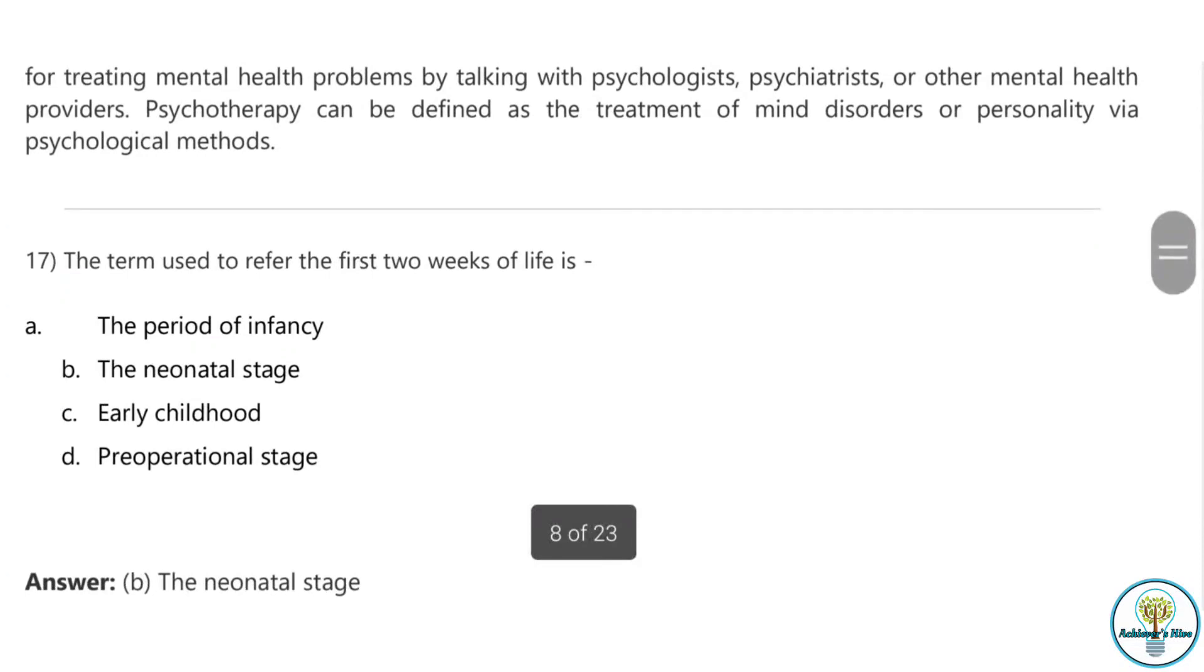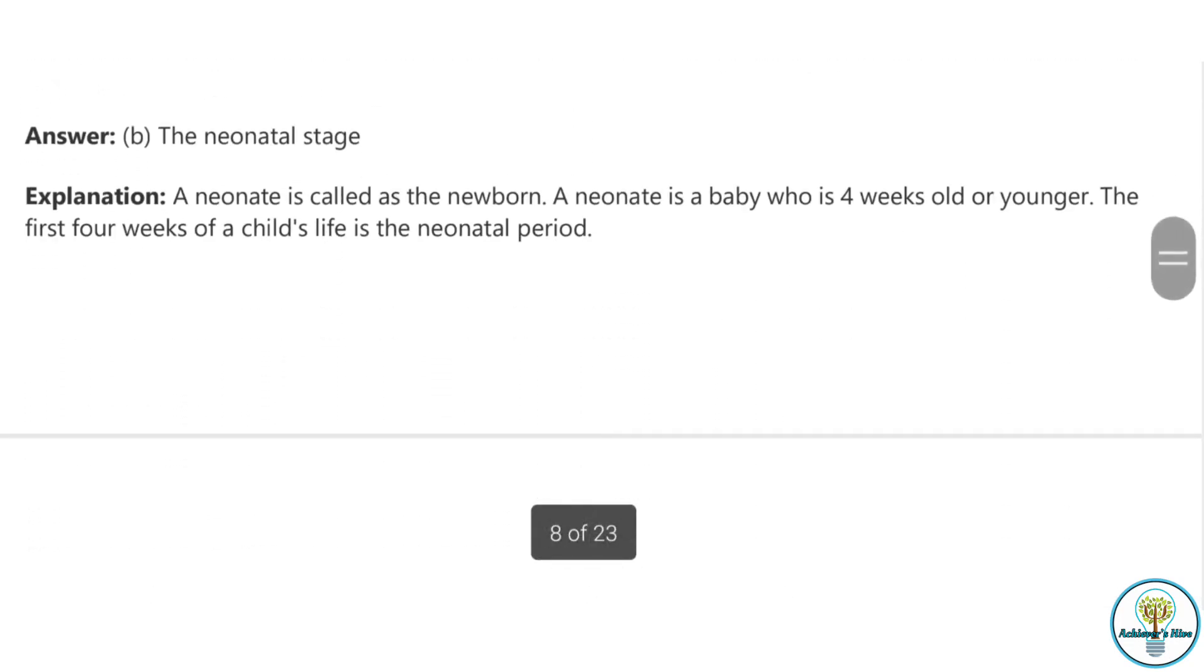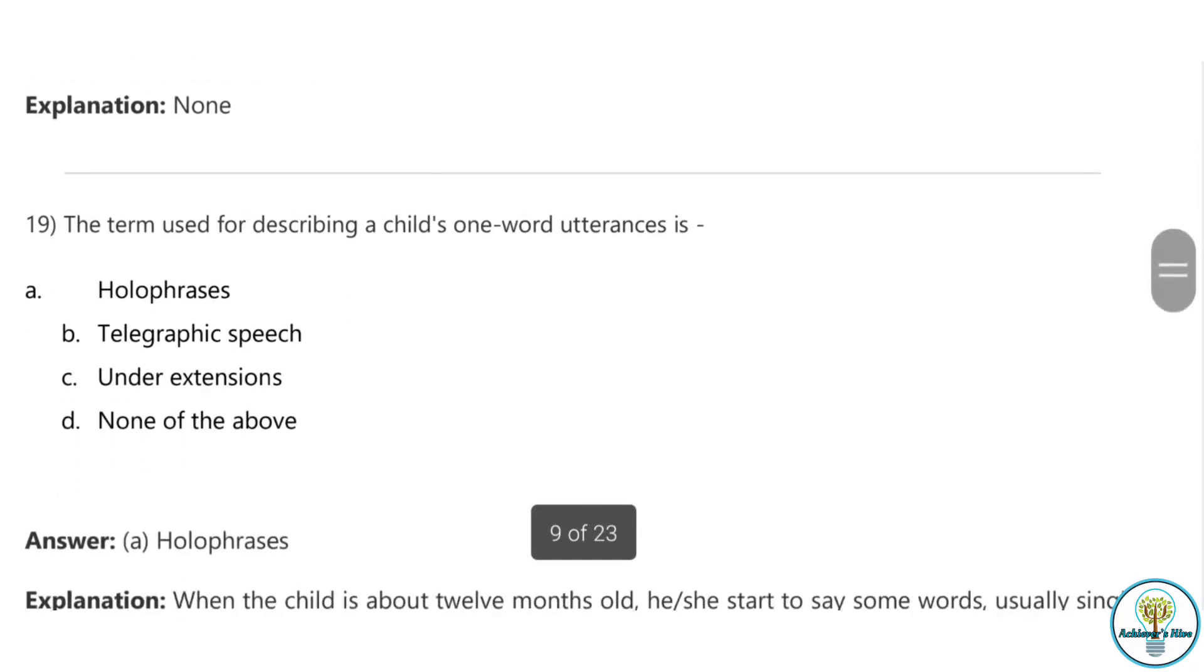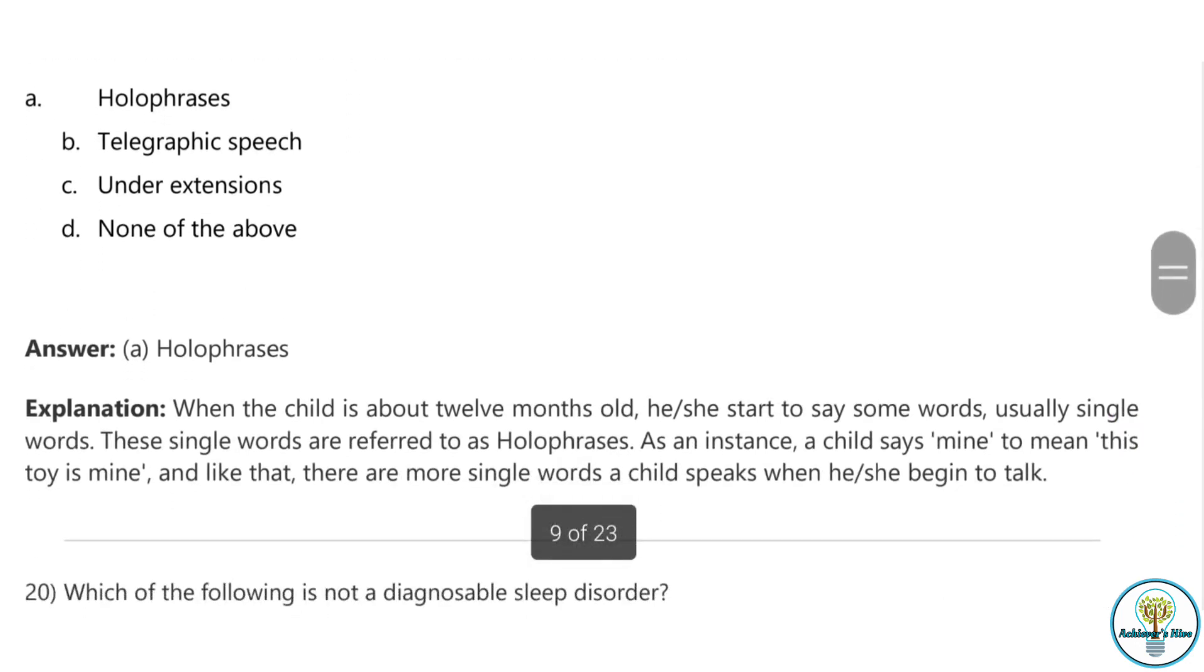Question seventeen: The term used to refer the first two weeks of life is known as the neonatal stage. Question eighteen: Which of the following is a part of the psychosocial domain? The answer is style of behaving. Question nineteen: The term used for describing a child's one word utterance is known as holophrases. When the child is about 12 months old, he or she starts to say some words, usually single words. These single words are referred to as holophrases.